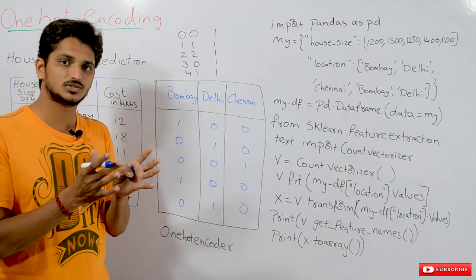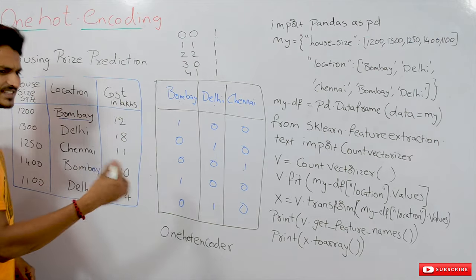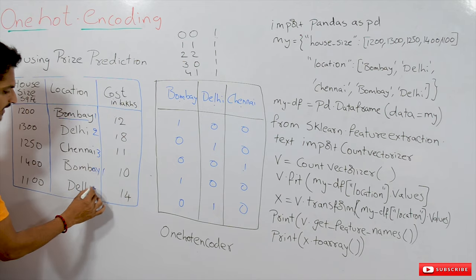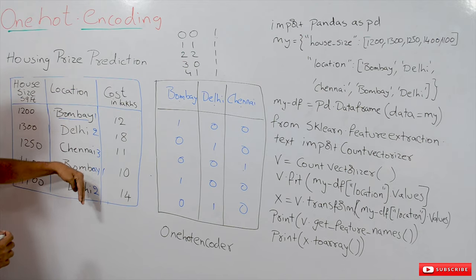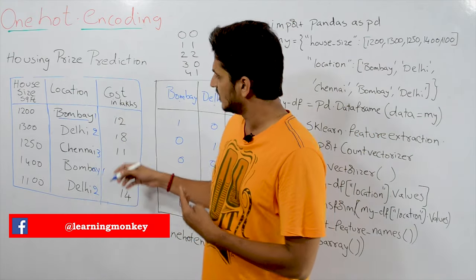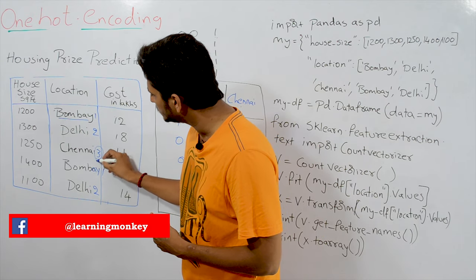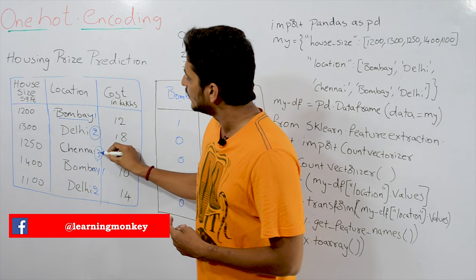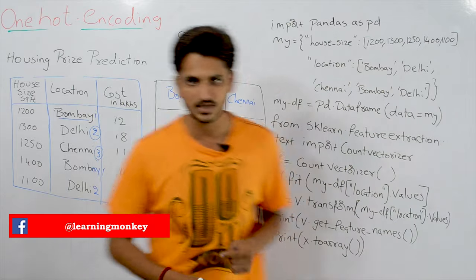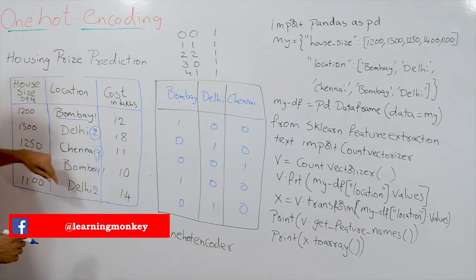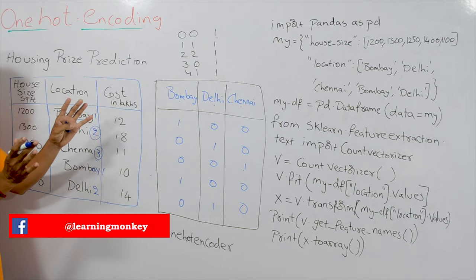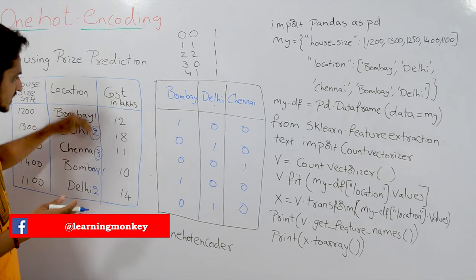One way to convert categorical data into numerical format is simply assigning numbers — Bombay 1, Delhi 2, Chennai 3. But this is not the right way. Why? When it comes to algebra and calculations, assigning 1, 2, 3 gives more weightage to Chennai over Delhi and more weightage to Delhi over Bombay. Our intention is not to give more weightage — it is just to separate the categories. So that's the reason we should not use this simple number-assigning method.